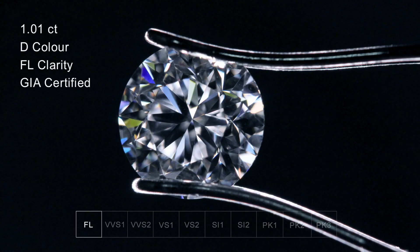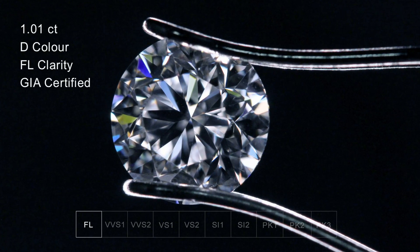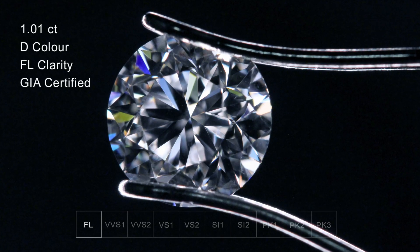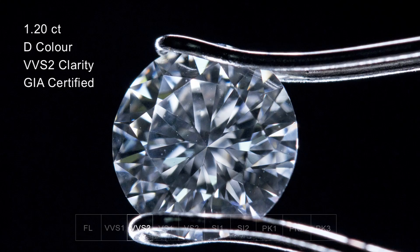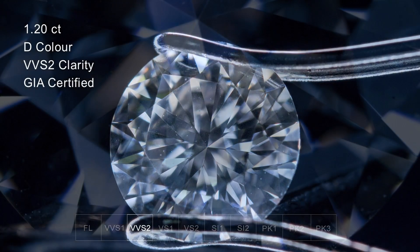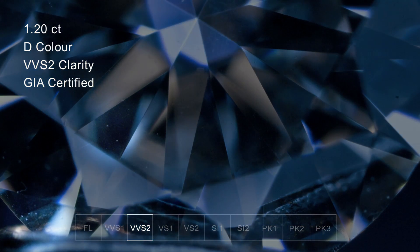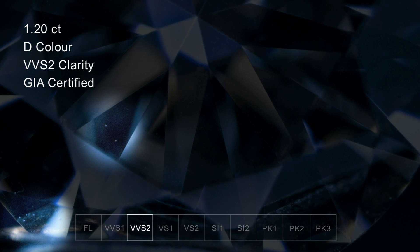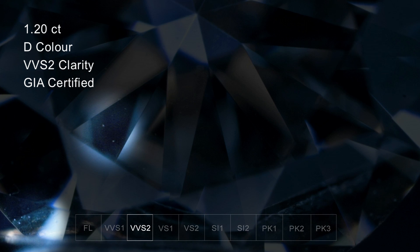The clarity grades are assessed at 10 times magnification. The highest clarity grade is flawless, meaning there are no impurities in the diamond visible at 10 times magnification. Next down the scale is VVS1 and VVS2. VVS stands for very very small, and at this level the impurities will resemble 5 to 10 microscopic specks of dust within the stone. This level of clarity is very rare and you certainly can't see the impurities with the naked eye.